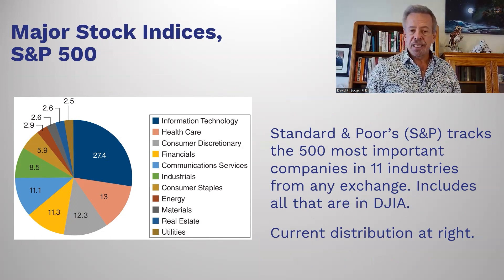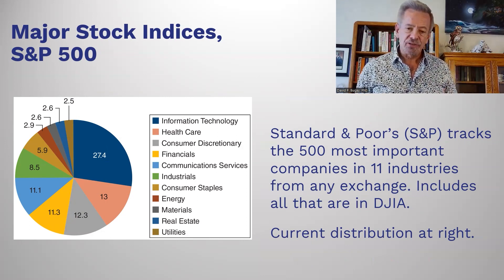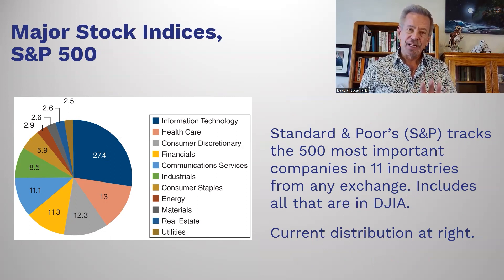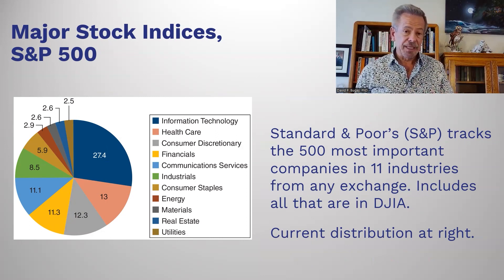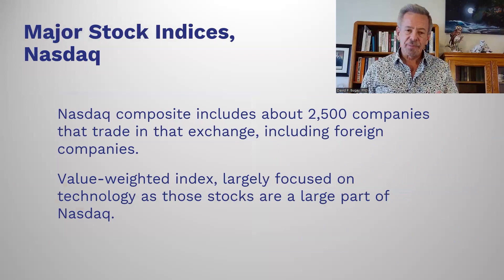The S&P 500 sectors include: Information Technology, Healthcare, Consumer Discretionary, Financials, Communication Services, Industrials, Consumer Staples, Energy, Materials, Real Estate, and Utilities. Those are the 11 different major sectors in our economy, and this is how you track it on the S&P 500.